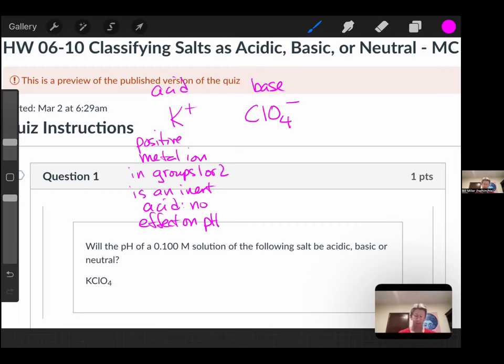Now the base. For bases, what you're going to typically do is look at what the conjugate weak acid is. The conjugate weak acid of this is going to be HClO4. And HClO4 is a strong acid.